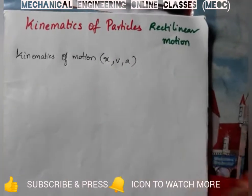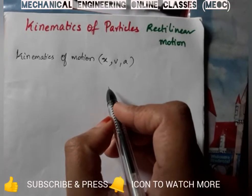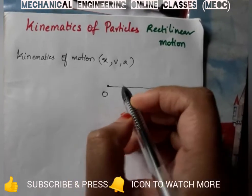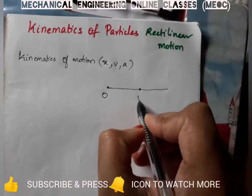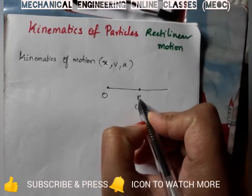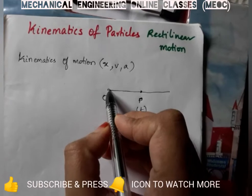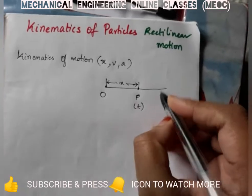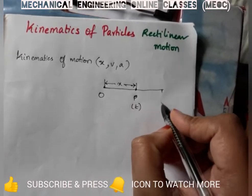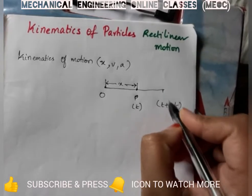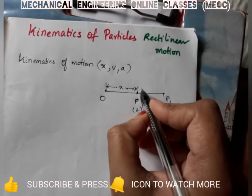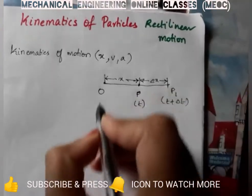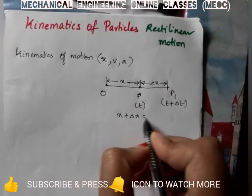The position of a particle is defined with reference to a fixed origin. Let the fixed origin be somewhere here, with the particle at point P at time t. Let the distance from O to P be x. At time t plus delta t, if the particle is at point P1, let this distance be delta x, or let x plus delta x be x1.